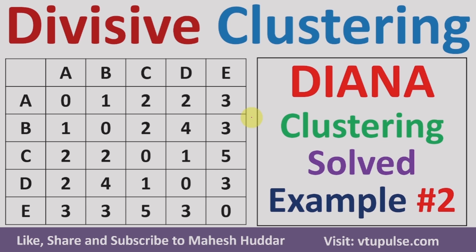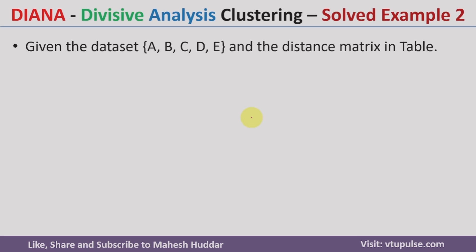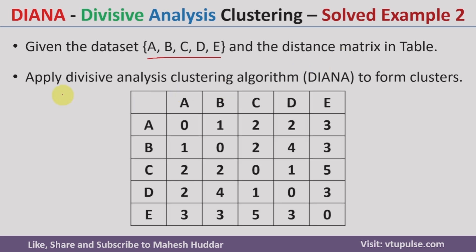Welcome back. In this video I will discuss how to apply the divisive clustering algorithm to the given dataset and form the clusters. This is solved example number 2. In this case, we have been given a dataset with 5 data points and the distance matrix is given in the table. We need to apply the divisive analysis clustering algorithm to form the clusters.